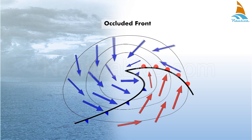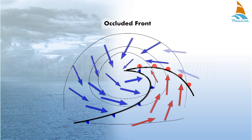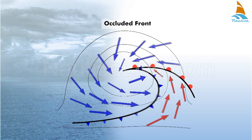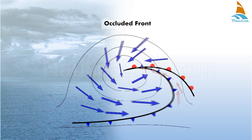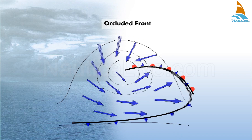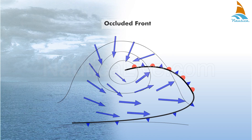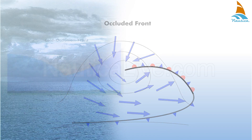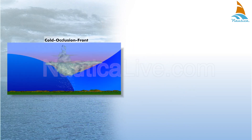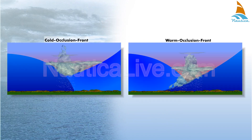An occluded front occurs when a cold front catches a warm front. There are two types of occluded fronts: the cold occlusion front and the warm occlusion front.